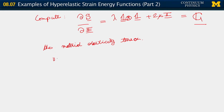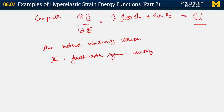The quantity I is the fourth-order symmetric identity tensor. The material elasticity tensor is also a fourth-order tensor.